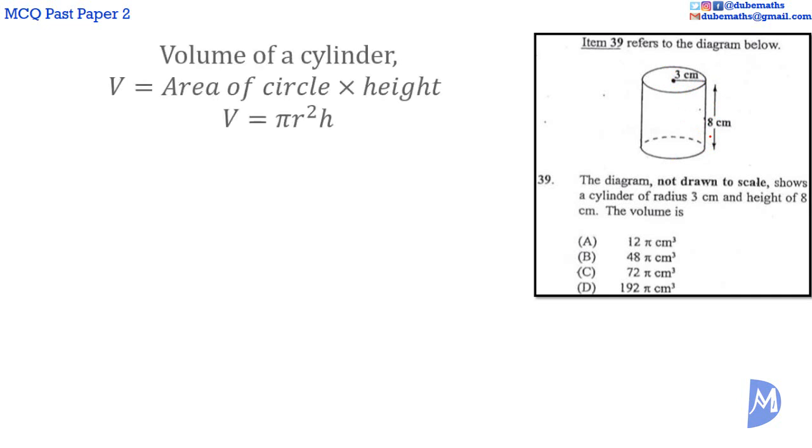Therefore, the volume is equal to the area of the circle of diameter 3 centimeters multiplied by the height H, which is equal to 8 centimeters in this case. The volume is equal to π multiplied by R squared, 3 squared multiplied by 8. 3 squared is equal to 9. 9 multiplied by 8 is 72. π by 72 or 72π. The answer is C.